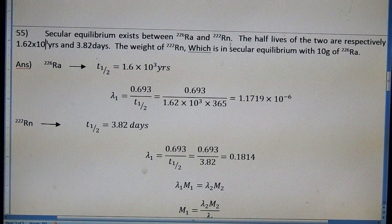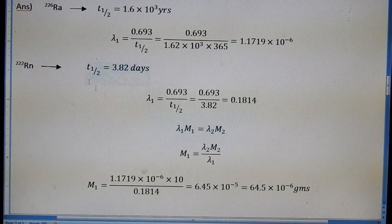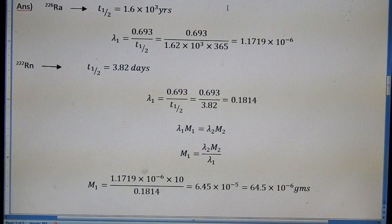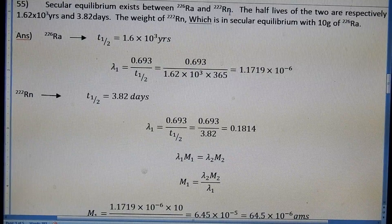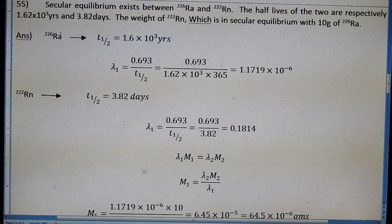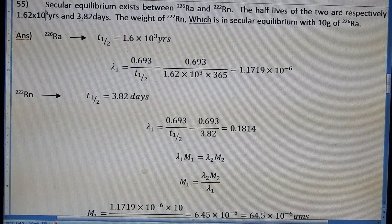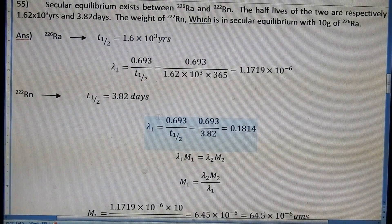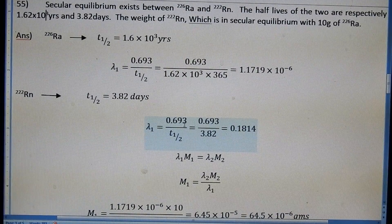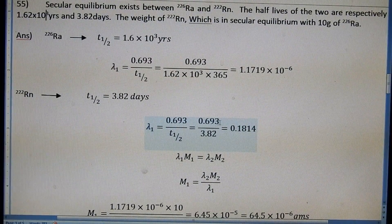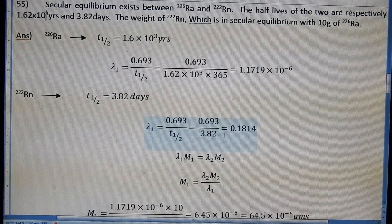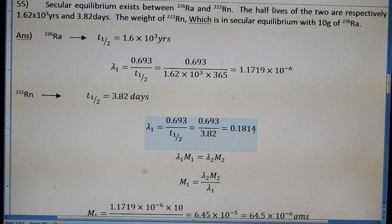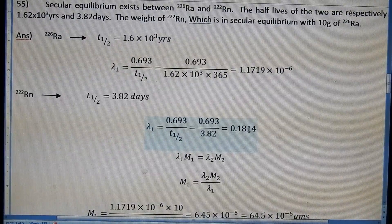Now to find the decay constant of Rn: the half-life of Rn is already given as 3.82 days. So λ₂ = 0.693 divided by 3.82, which equals 0.1814 per day. This is the decay constant of Rn.